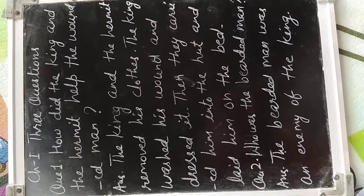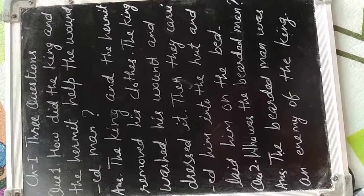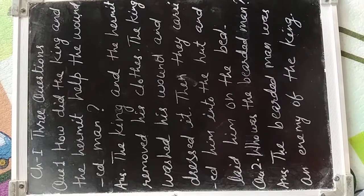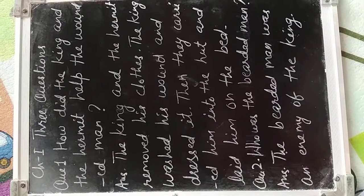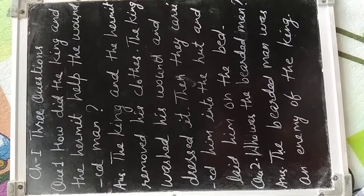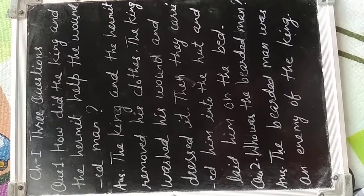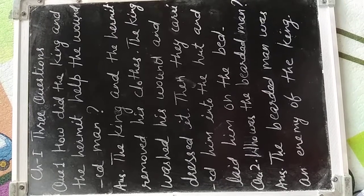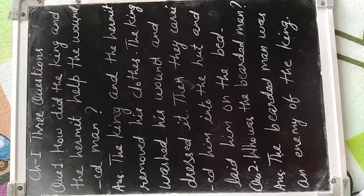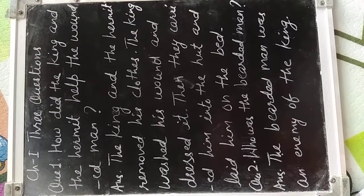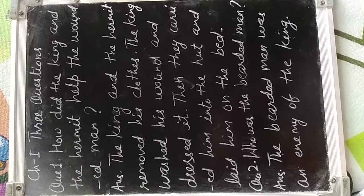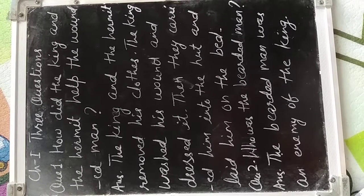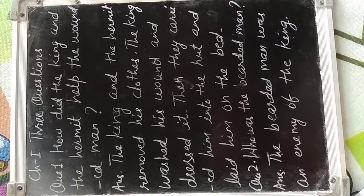Good morning students, we have completed lesson first of Honeycomb. You were given some questions to solve from the text. First question was: how did the king and the hermit help the wounded man? Raja ne aur sanyasi ne ghail vakti ki sahita kaise ki?